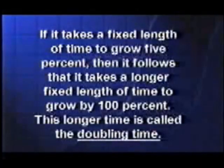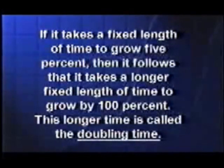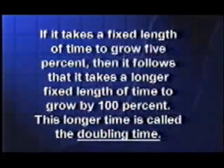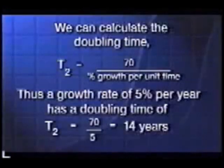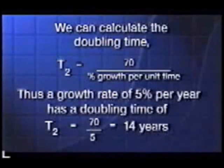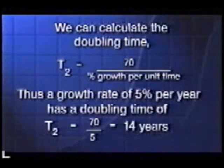If it takes a fixed length of time to grow five percent, it follows that it takes a longer fixed length of time to grow a hundred percent. That longer time is called a doubling time. We need to know how you calculate the doubling time, and it's easy — you just take the number 70 divided by the percent growth per unit time, and that gives you the doubling time.